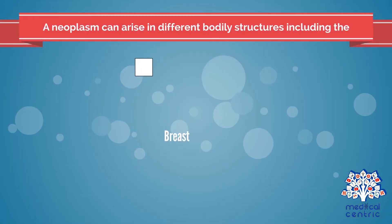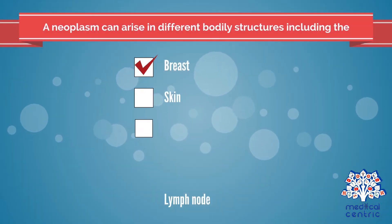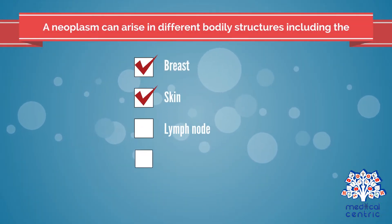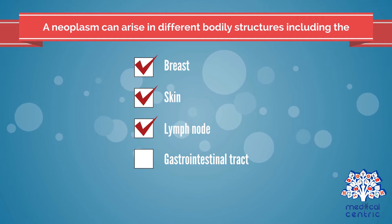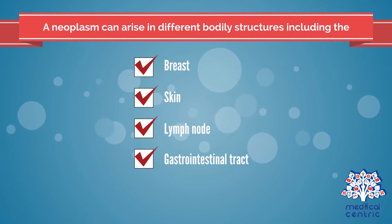A neoplasm can arise in different bodily structures, including the breast, skin, lymph node, gastrointestinal tract, and others.